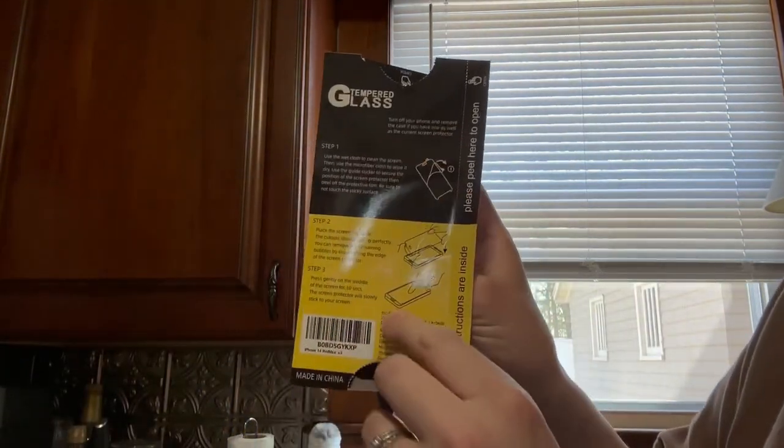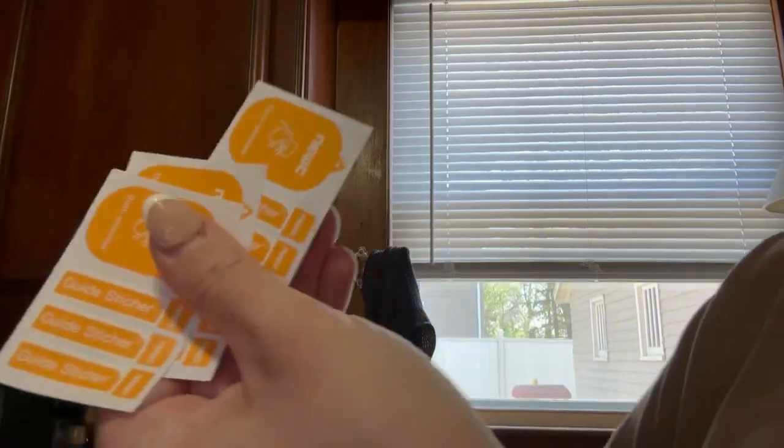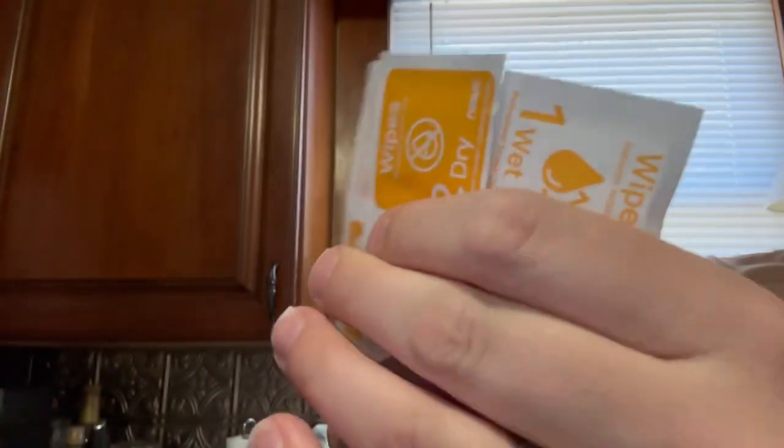This set comes with three and includes the instructions you need, wet and dry wipes, and stickers to get off any dust on your phone.